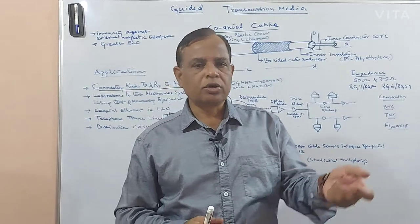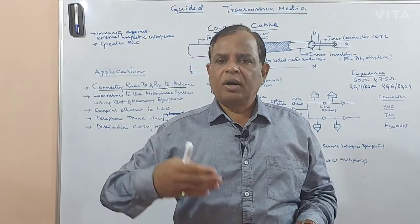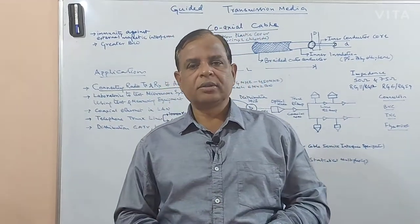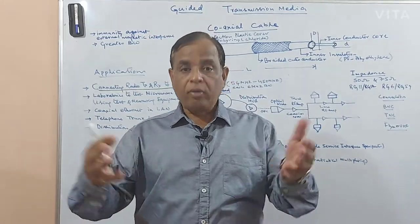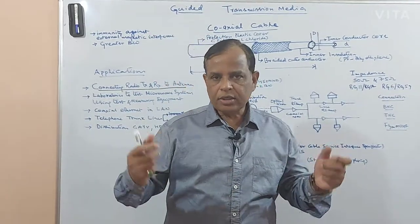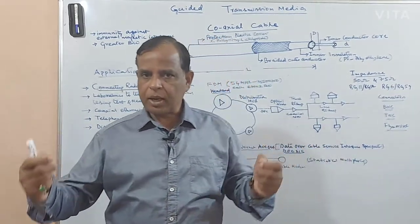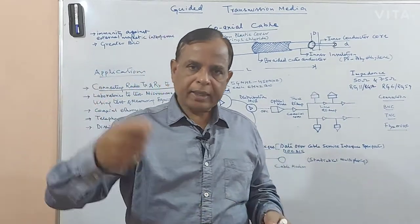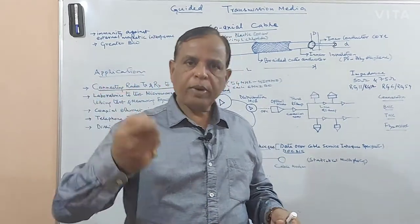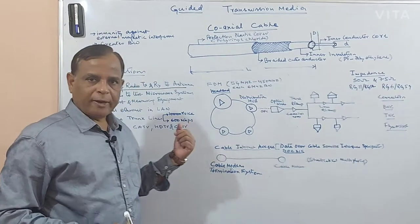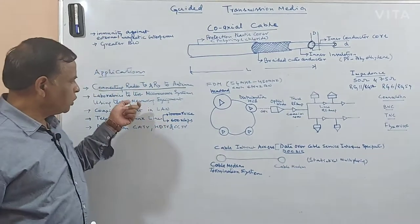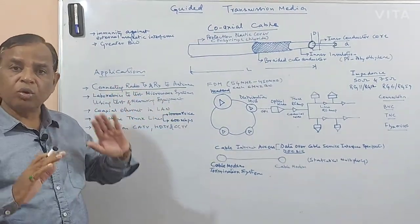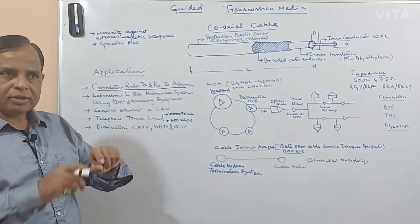Whenever you are working with microwave equipment in the laboratory, you use coaxial cables for testing and measuring equipment. You will be required to use oscilloscopes, signal generators, spectrum analyzers, and power meters. At different stages you want to check the parameters, and whenever you are connecting equipment to test equipment, you use coaxial cables only.